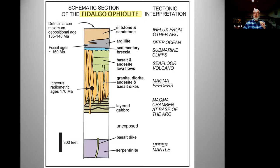The ages here are about 140 million years for the youngest and about 170 million years for the oldest igneous rock. It's impossible to date ultramafic rock — it just doesn't have the minerals or compositions needed to date it accurately, but you can guess that it's very, very old.